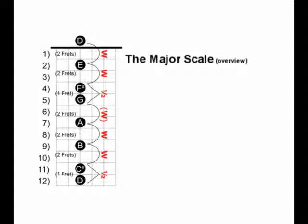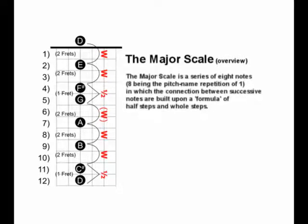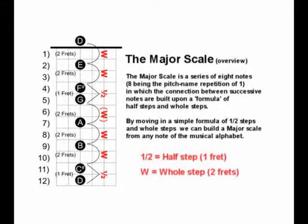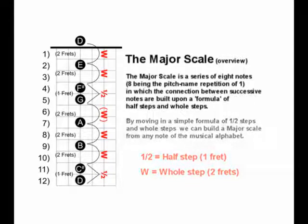The first order of business is to do a brief overview of the Major Scale itself. The Major Scale is a series of eight notes, eight being the pitch name repetition of one, in which the connection between successive notes are built upon a formula of half steps and whole steps. By moving in a simple formula of half steps and whole steps, we can build a major scale from any note of the musical alphabet. A half step equals the movement of one fret, and a whole step equals the movement of two frets.